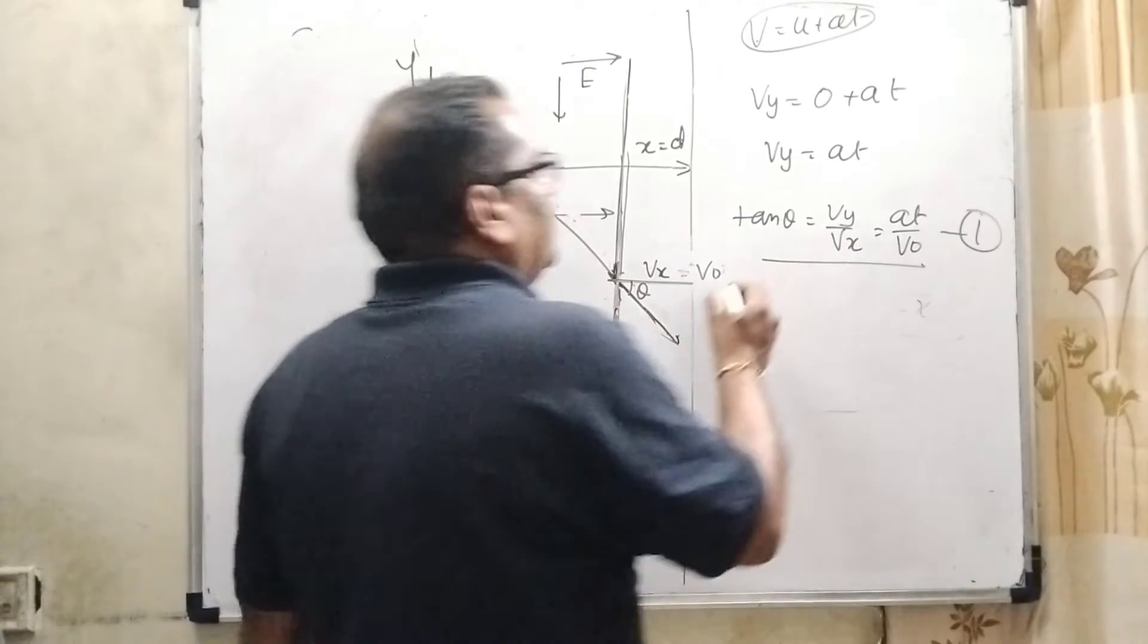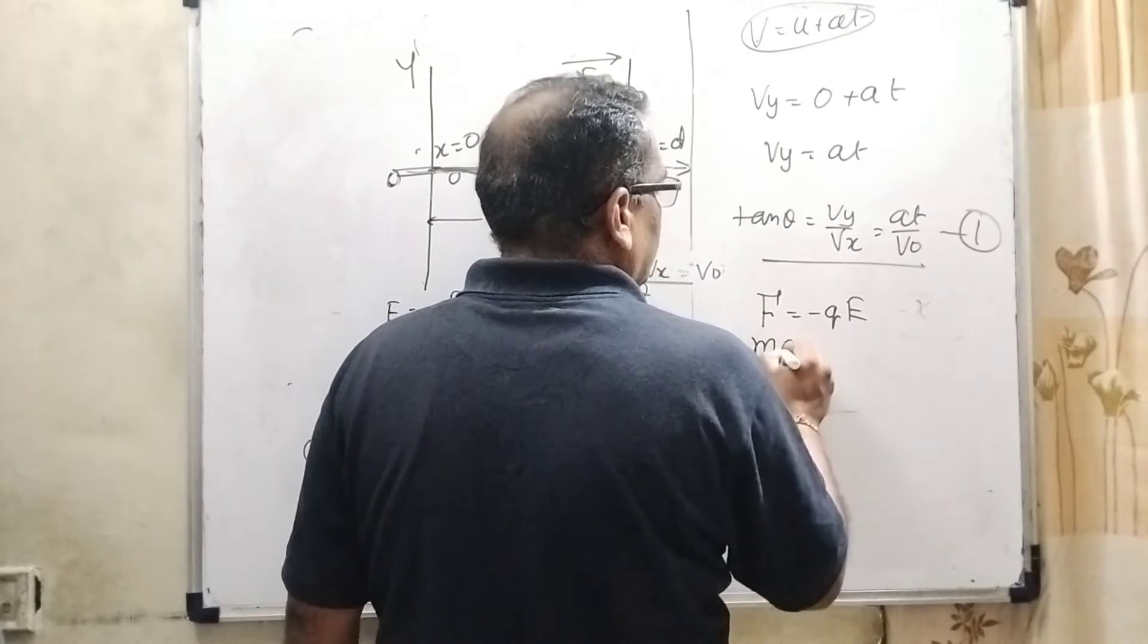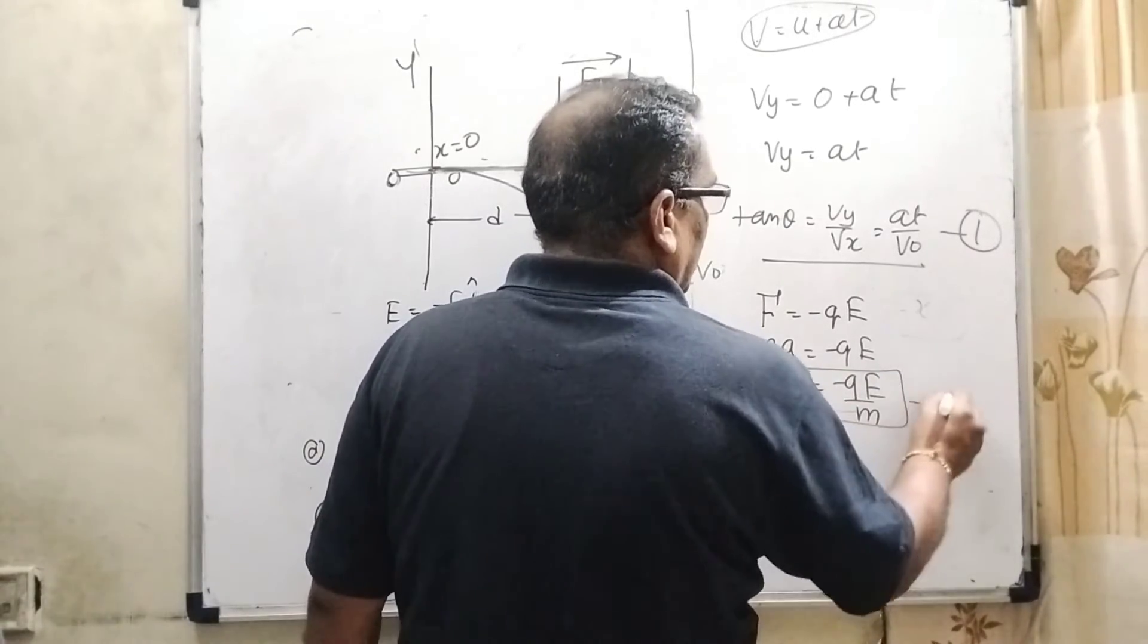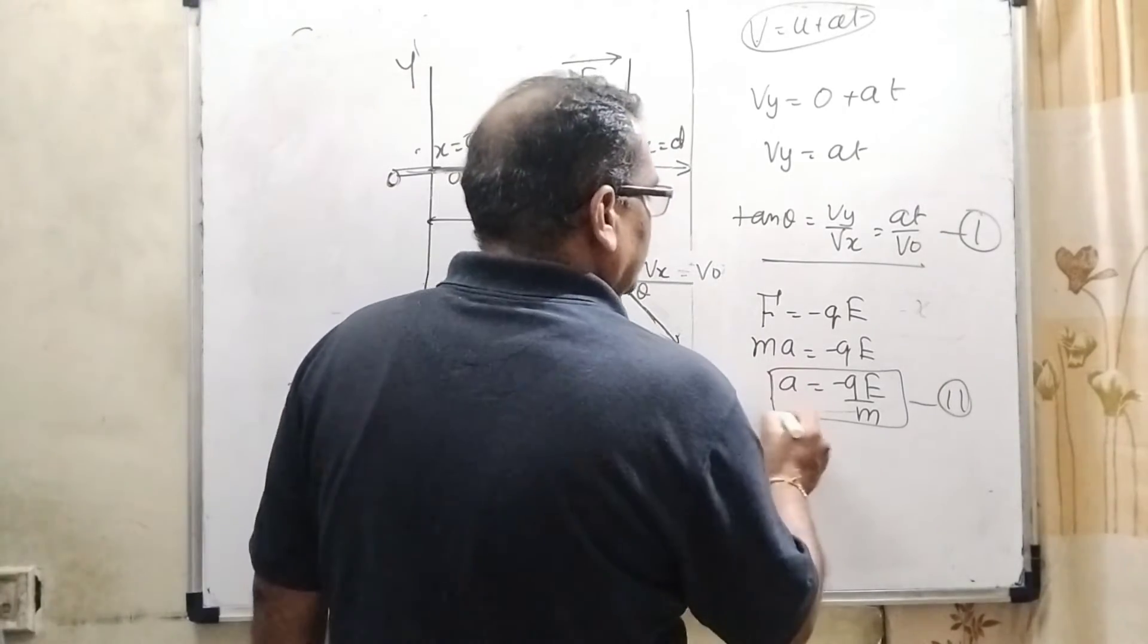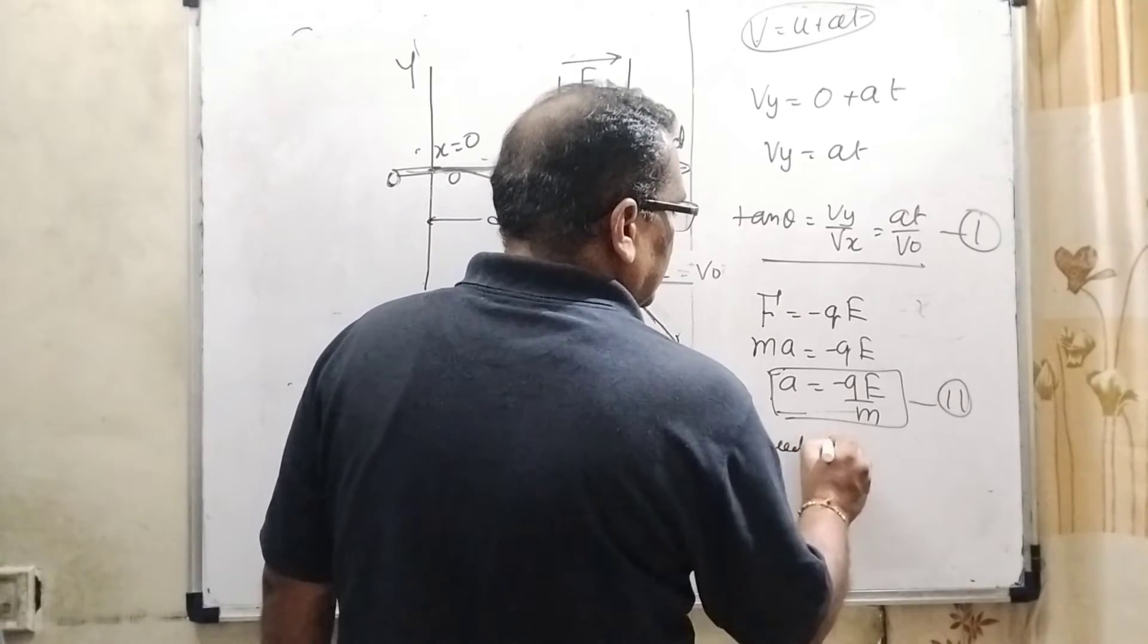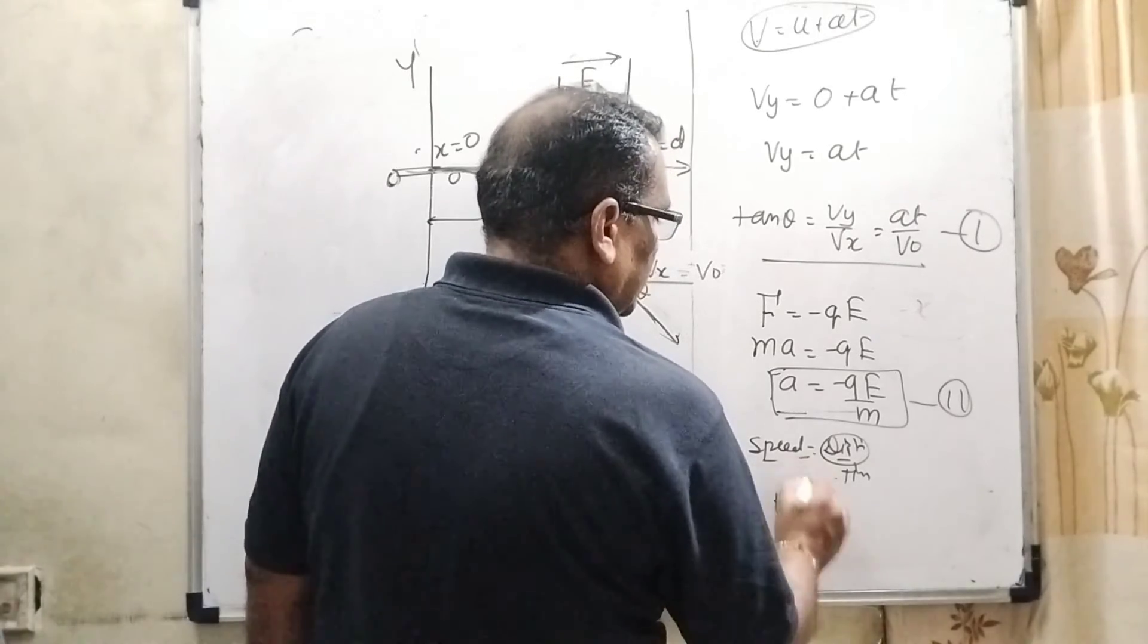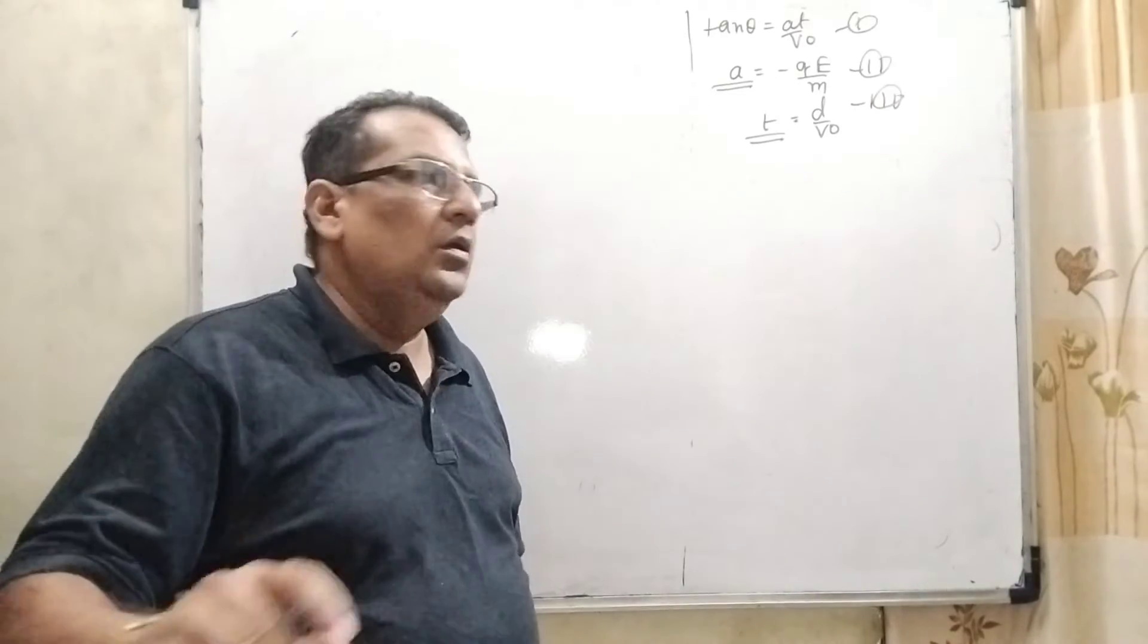Now, second thing: acceleration. As we know that F equal to minus q into E. But force equal to mass into acceleration. So acceleration can be written as minus qE by m. So it is considered second equation. And third, we have to find out speed equal to distance upon time. So here time, that is considered t, and total distance, that is d, and uniform velocity, that is v0. So it is third equation.